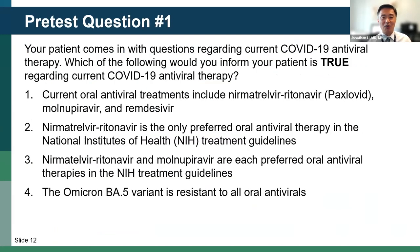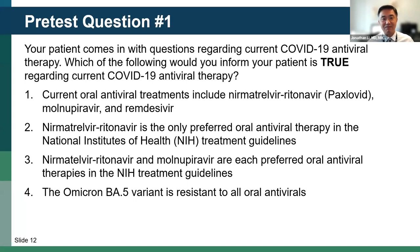Let's go to our pre-test question number one. You have a patient who comes in with questions regarding current COVID-19 antiviral therapy. Which of the following would you inform your patient is true regarding current therapy? Is it one, current oral antiviral treatments include nirmatrelvir/ritonavir (Paxlovid), molnupiravir, and remdesivir? Two, nirmatrelvir/ritonavir is the only preferred oral antiviral therapy in the NIH treatment guidelines? Three, nirmatrelvir/ritonavir and molnupiravir are each preferred oral antiviral therapies in the NIH treatment guidelines? Or four, the Omicron BA.5 variant is currently resistant to all oral antivirals? The responses are pretty widely distributed amongst answers one, two, and three.